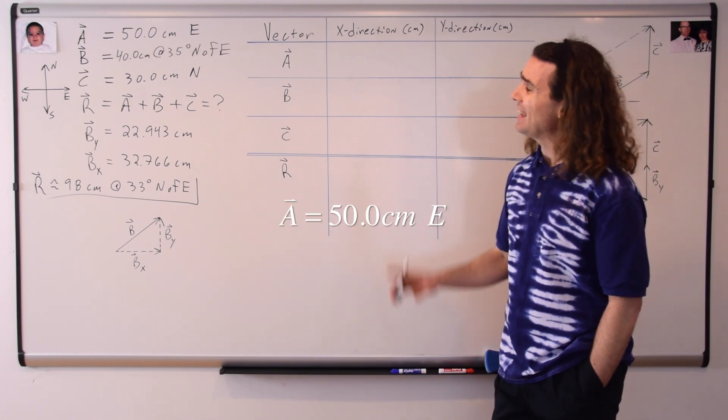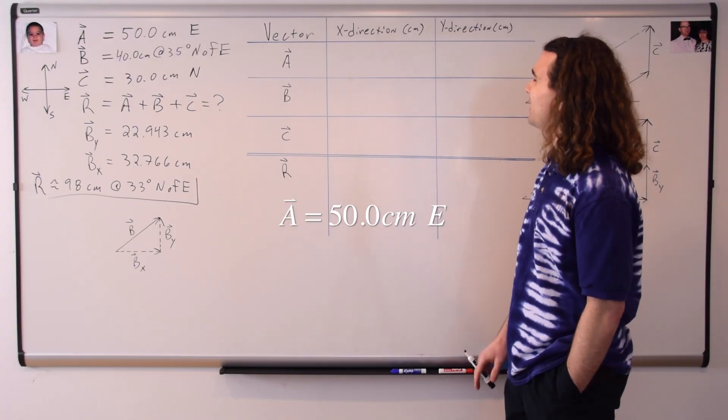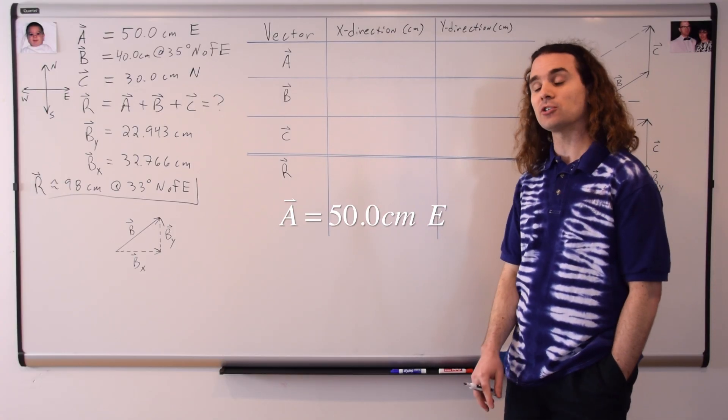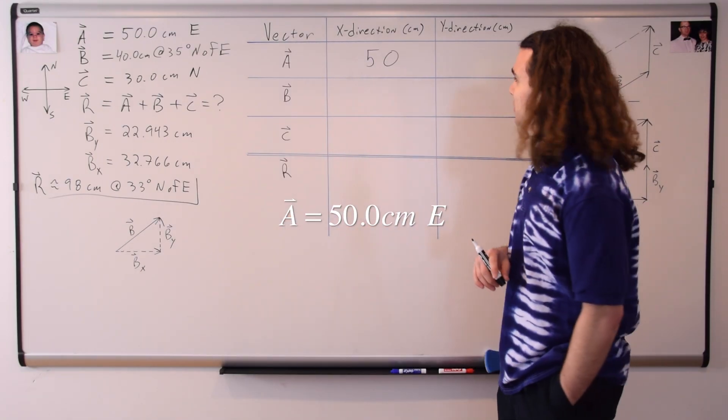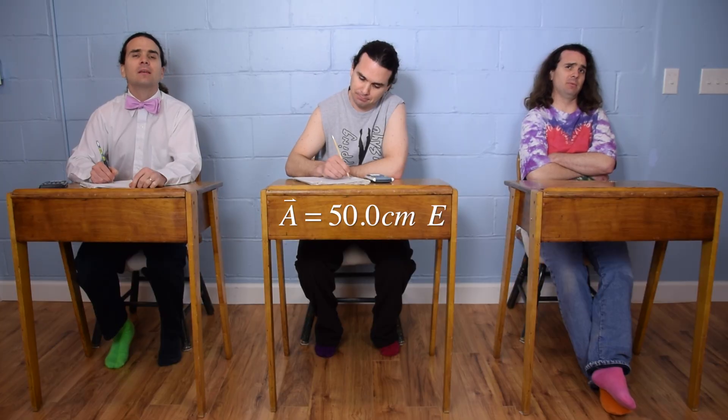Bo, vector a is 50.0 centimeters east. Could you please tell me what is the component of vector a in the x direction? That would be 50 centimeters. And Bo, what is the component of vector a in the y direction? That would be 50 centimeters.